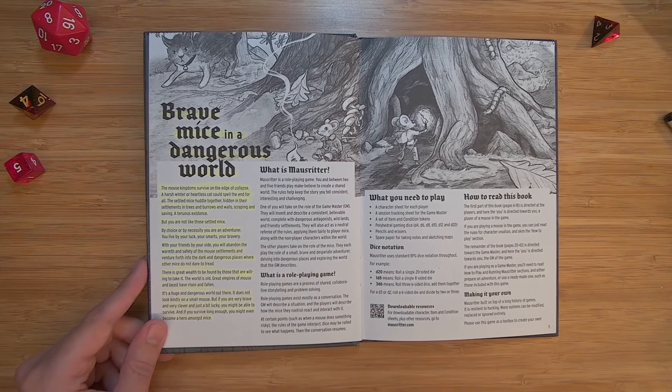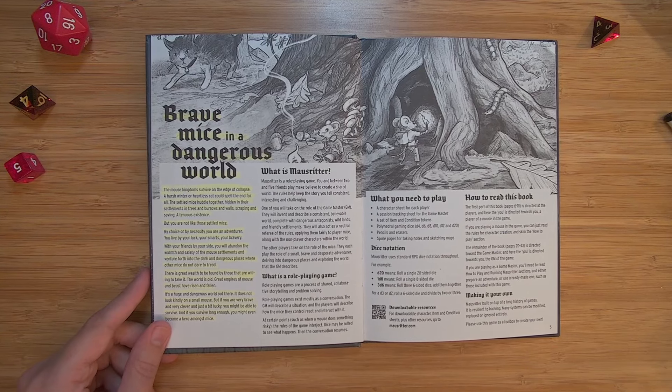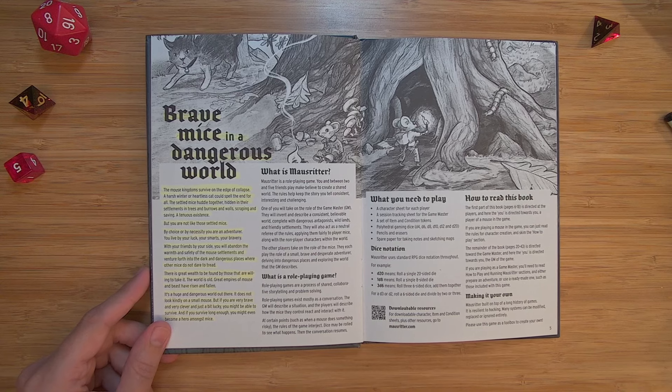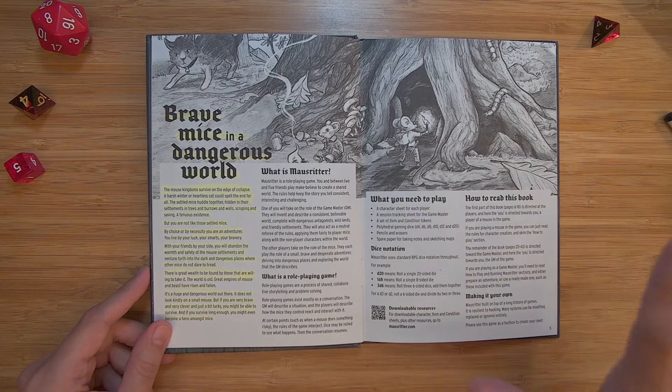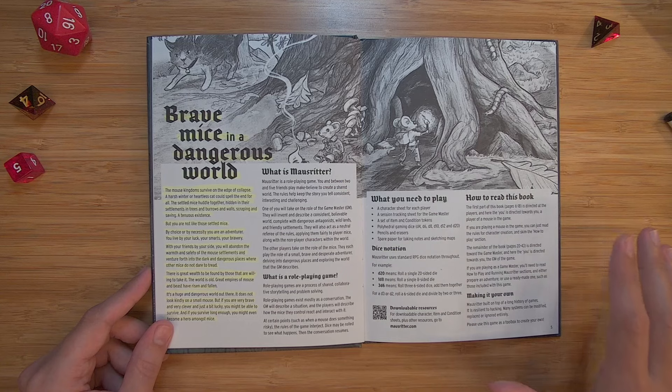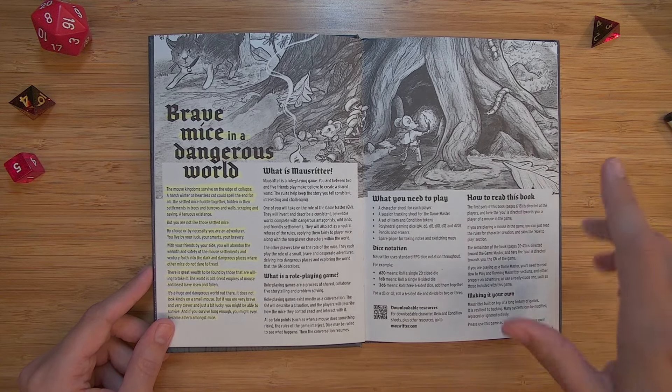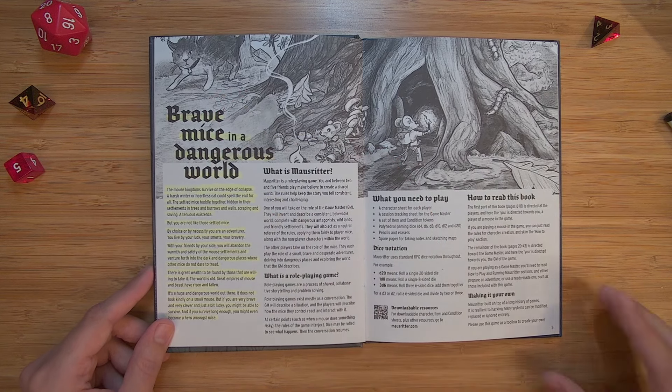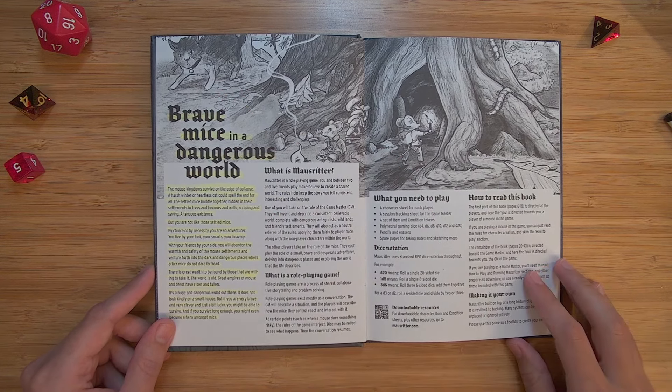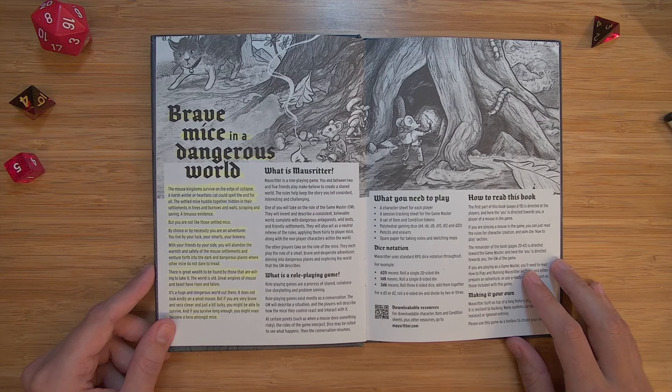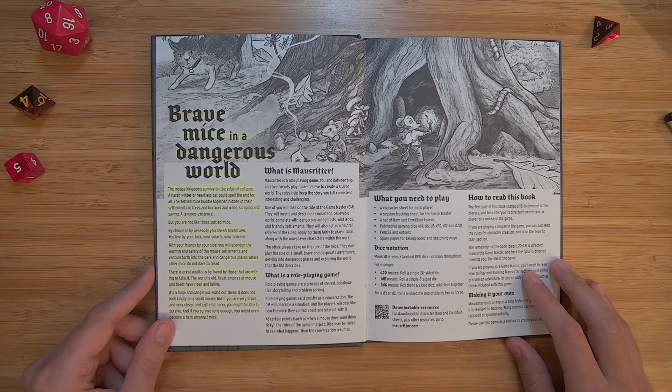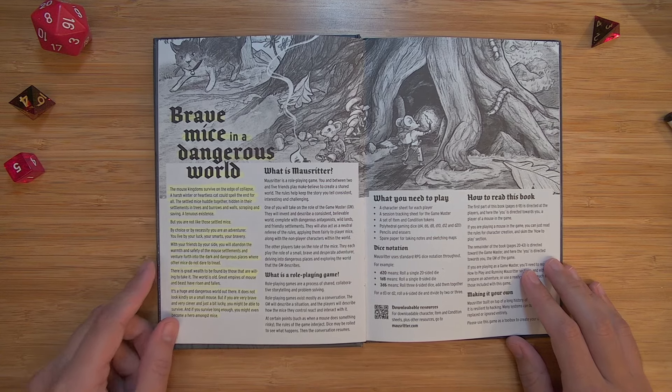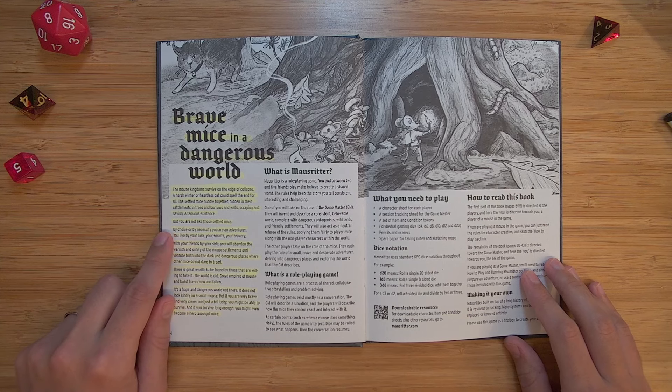Brave mice in a dangerous world. The mouse kingdom survives on the edge of collapse. A harsh winter or heartless cat could spell the end for all. So I love immediately that we get a sense of the scale and scope of this game. It is not dungeons and dragons. It is winters and cats. So the cat is sort of like the dragon of this world, which I absolutely love. The settled mice huddle together, hidden in their settlements, in trees and burrows and walls, scraping and saving a tenuous existence. But you are not like those settled mice.